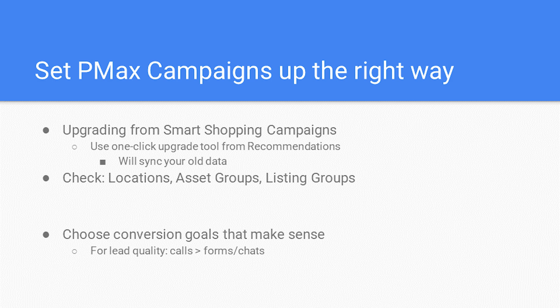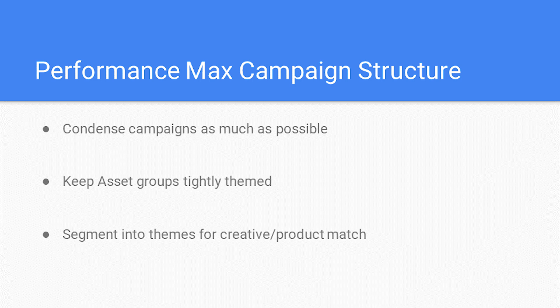What is the best way to structure your Pmax campaigns? Unless you need to split into multiple campaigns for location targeting or budget allocation, I recommend condensing these as much as possible. This will allow the system more data signals to reach optimal performance. Since there's no reporting on the asset group level, you may want to break out different products and services into separate campaigns for reporting purposes. For stores with few products, we try to condense as much as possible — simplicity over complexity, always. Segment into themes of product or service so that the creative and copy will match your underlying offerings.